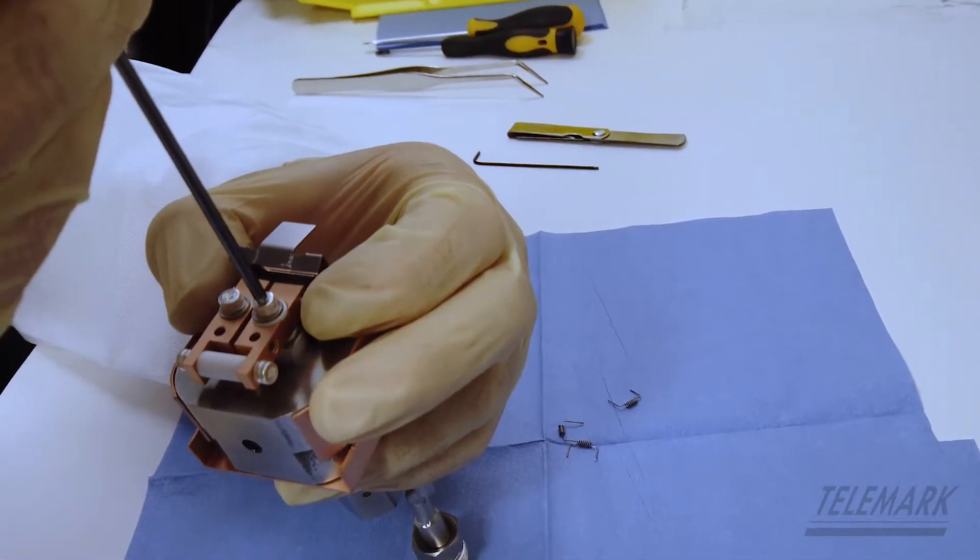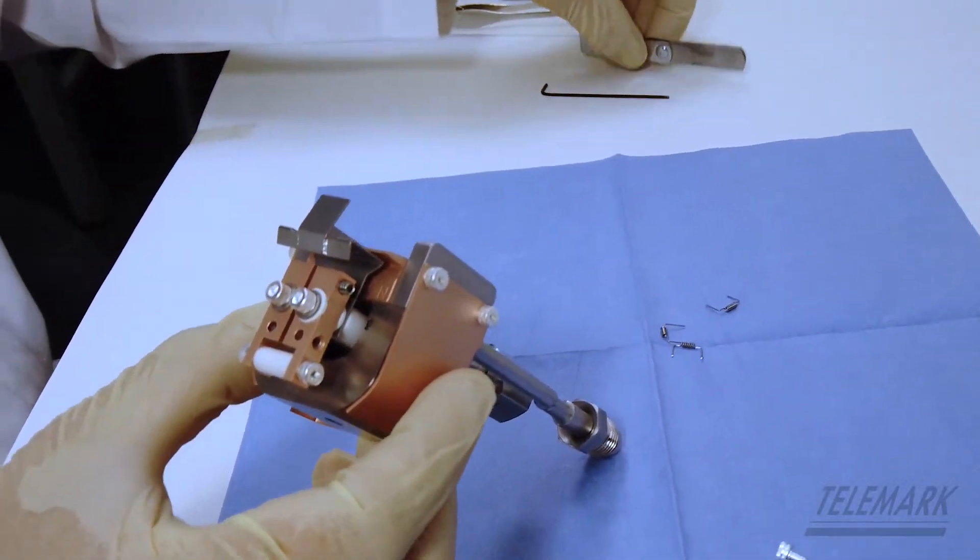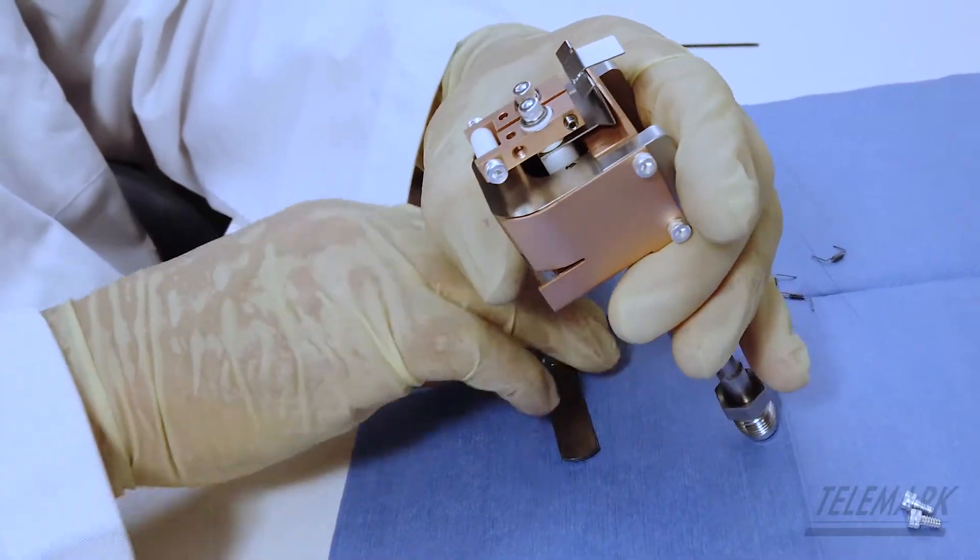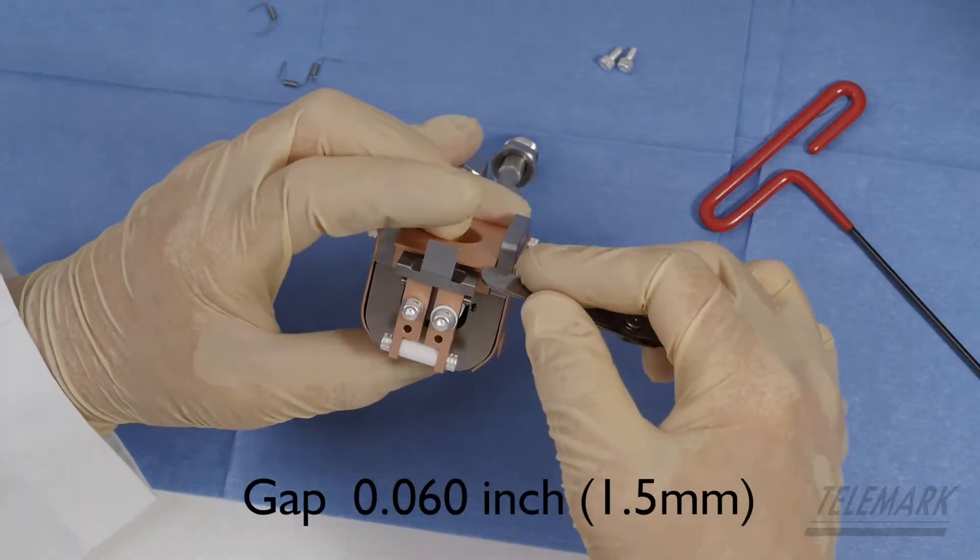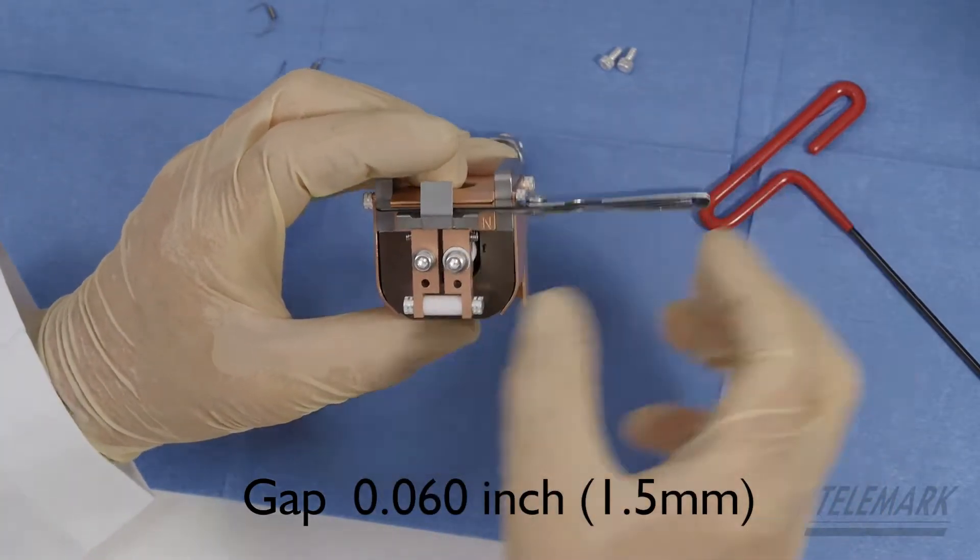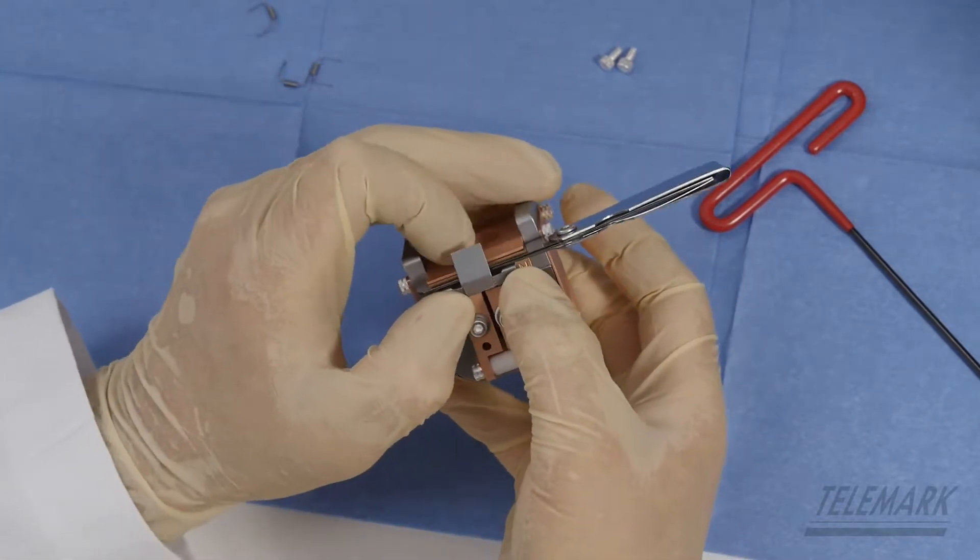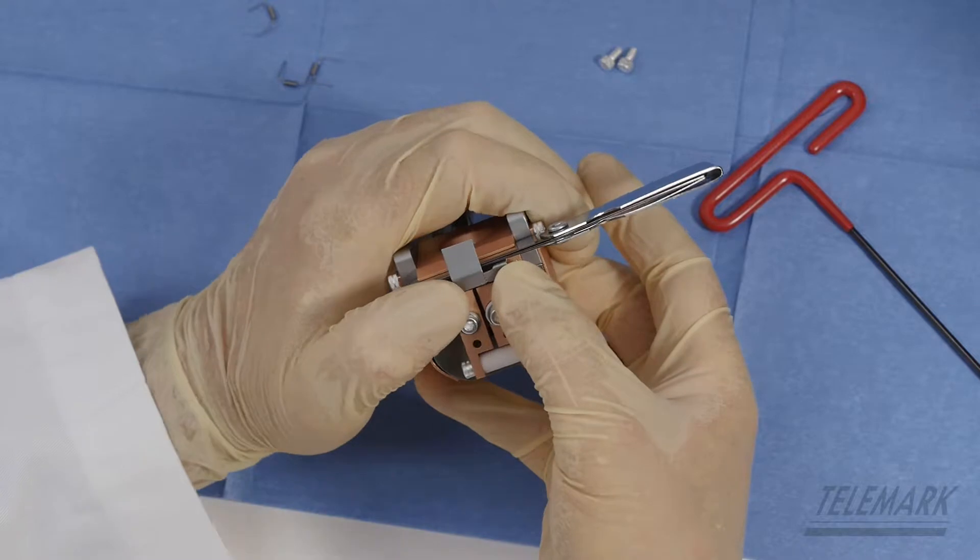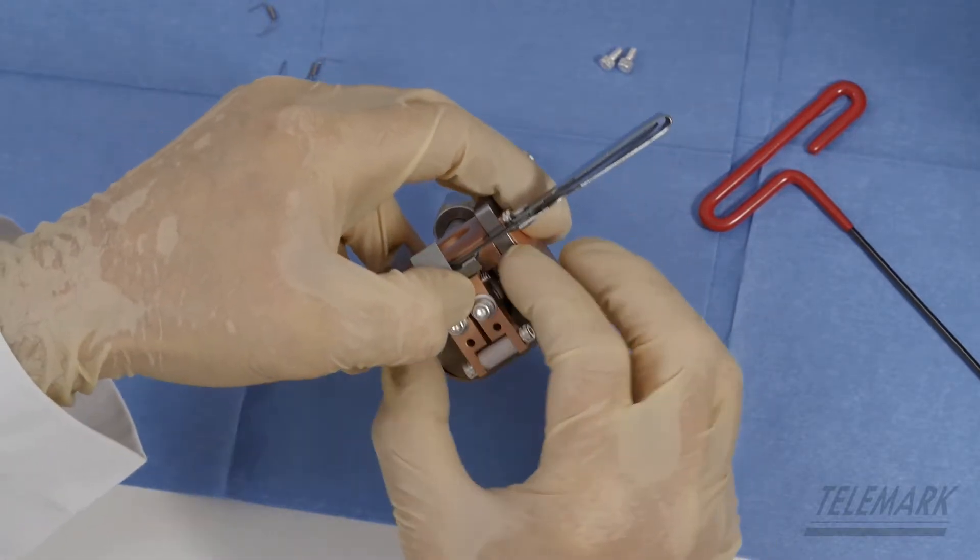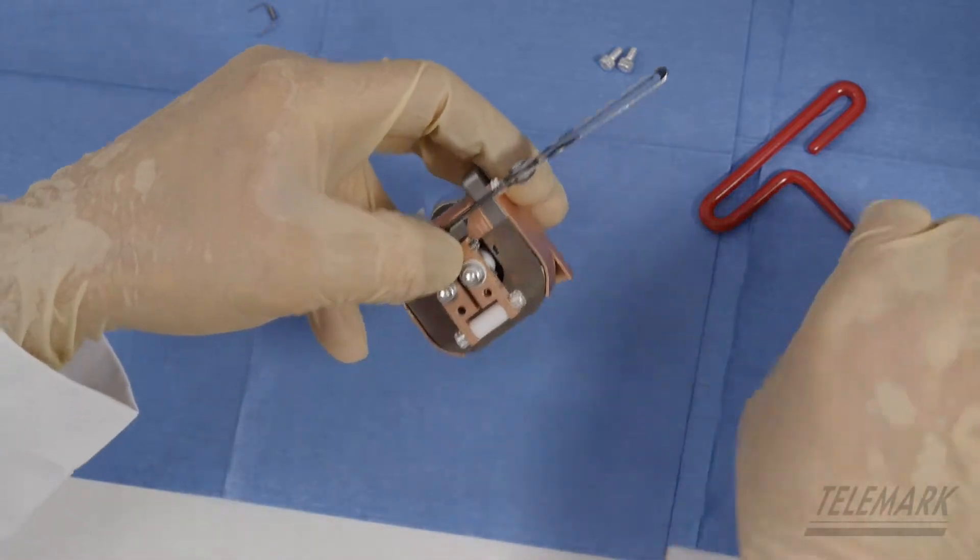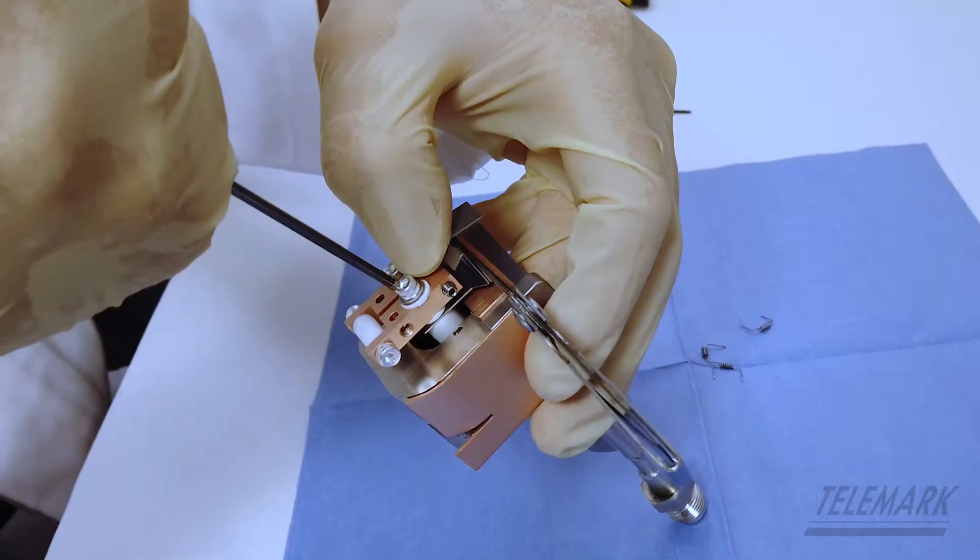Now you need some measure of gapping device. I got my feeler gauges, they're already preset for 60 thousandths. And this is where I set 60 thousandths between the beam former and the lip there which would be the anode. And then just kind of press your finger up in there, hold that and thumb up in there, hold that into place. Try to make sure your cathode blocks stay square.